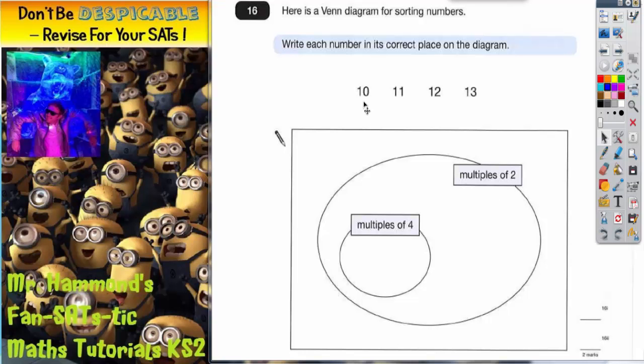So let's take each number. To begin with, the number 10. Well, number 10 is even, so it is a multiple of 2, but it's not in the 4 times table. So the number 10 will have to go in this oval, and that's number 10 done.